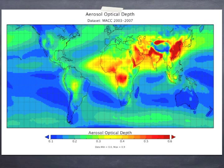This map shows aerosol optical depth, a measure of the total amount of aerosol in the atmosphere. It's been averaged across several years. The areas in blue show places where you don't generally get much aerosol. The areas in red show places where there's often a lot of aerosol, with many different sources contributing towards the distribution seen here.